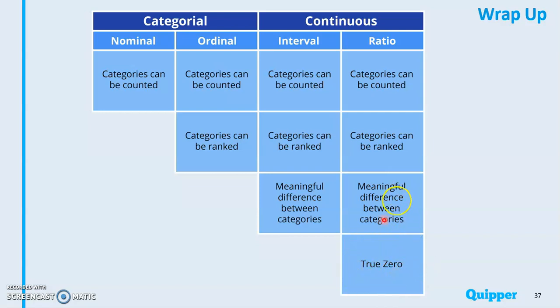The true zero point is what differentiates the ratio variable from the interval variable. In interval variable, there may be a zero value, however it's not the true zero point. With ratio, true zero means the zero value really means the absence of that particular variable.